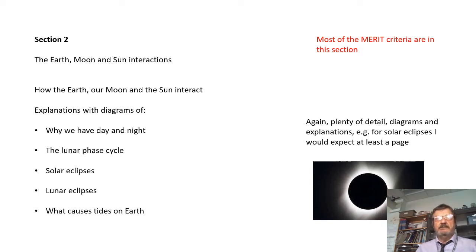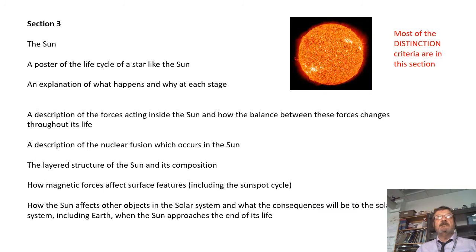Then Section 3 is about the Sun, and this is the hardest section, this is the trickiest to understand. A poster of the life cycle of a star like the Sun. You'll have done this at GCSE. You start with a nebula, then a protostar, then main sequence, and then red giant, etc. That stuff, with an explanation of what's happening at each stage and why it happens.